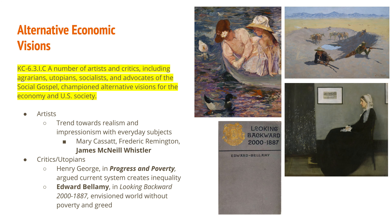A number of artists and critics, including agrarians, utopians, socialists, and advocates of the Social Gospel, championed alternative visions for the economy and U.S. society. What they are trying to respond to is the growing inequality between rich and poor, industrialists and workers. It's starting to become very clear that those at the top are very rich and doing well, while those at the bottom are really struggling despite all the work they do, living in crowded, unhygienic cities.